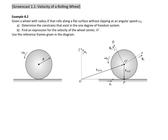Now we want to do two things with this problem. The first is to determine all of the constraints present in a rolling wheel, and to do that we need to look at the degrees of freedom. We use the expression: m degrees of freedom equals 3n minus k, where n is the number of rigid bodies and k is the number of constraint equations. With n equals 1, that gives us m equals 3 minus k.